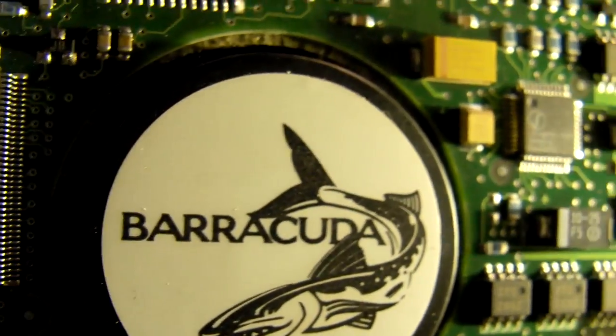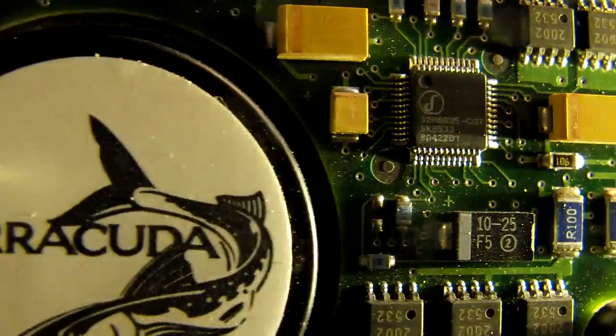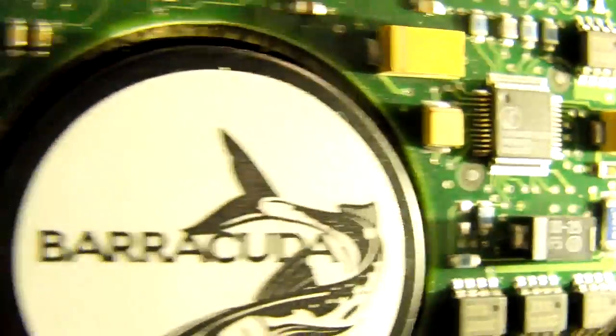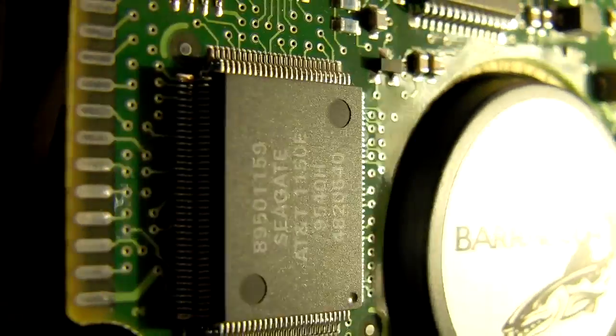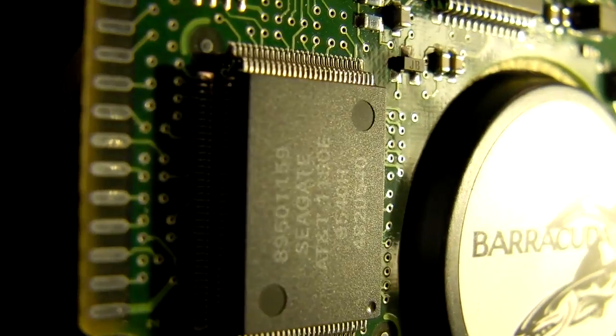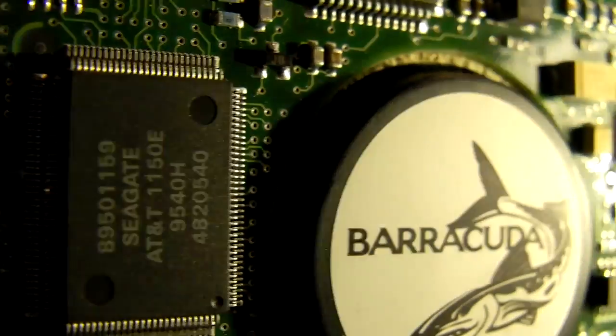This is an old cool Barracuda hard drive. This is with a standard macro lens. This is actually a high quality one. This is the macro setting for this camera. Let's see, that's pretty cool.